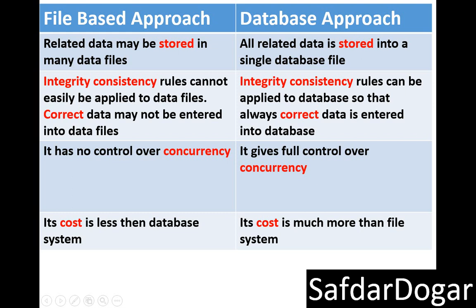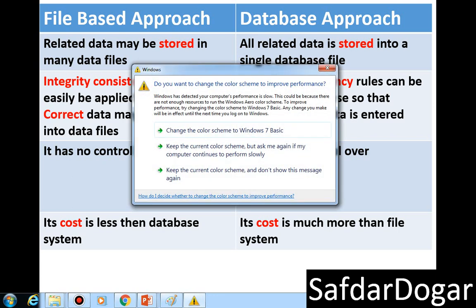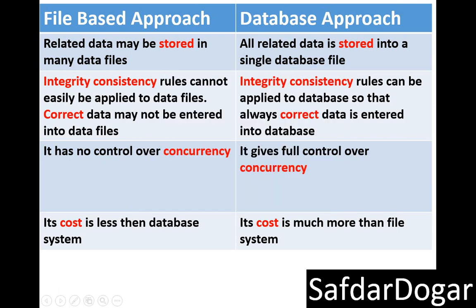The file-based approach has no control over concurrency, whereas the database approach gives full control over concurrency. Concurrency means that if many people want to access your data at one time, you can control that in the database. Finally, the cost of a file-based system is less than a database system, but the cost of a database system is much more than a file-based system.